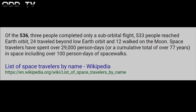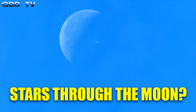Can't go past low Earth orbit — that equals can't get past the barrier, also known as the dome or the firmament. If you look up how many people have been to space: of the 536, three people completed only a sub-orbital flight, 533 people reached Earth orbit, 24 travelled beyond low Earth orbit, and 12 walked on the moon. So it seems the Apollo mission was the only one to ever get to deep space. You would think that by now we'd have several bases on the moon and would have already been to Mars a few times. There are documented cases of being able to see stars through the moon, so this begs the question: is the moon even a physical object?